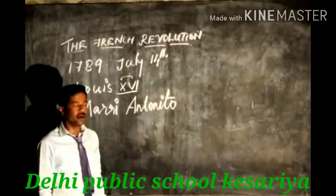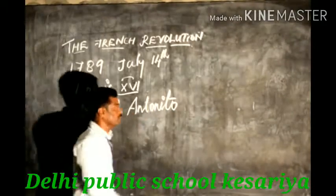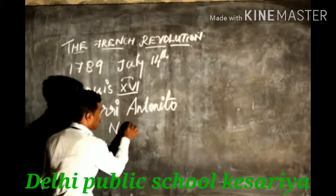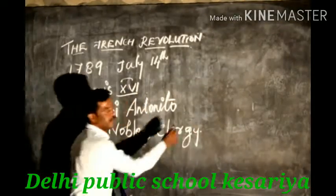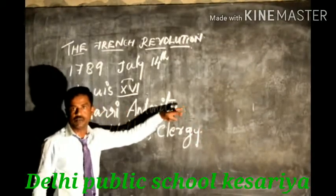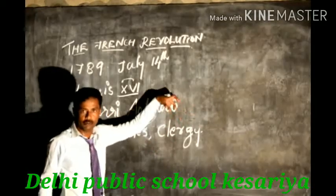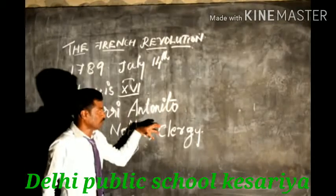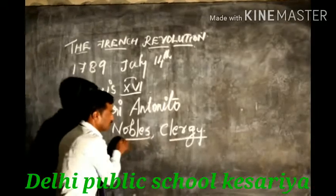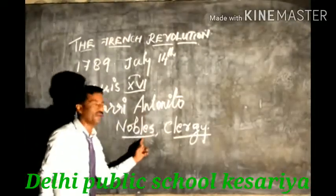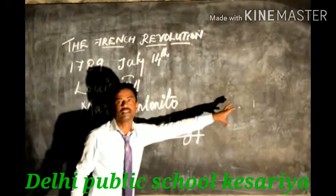At that time 90% of French people were commoners, and 10% were nobles and clergy. Clergy means the priests of the church — the fathers and bishops. The high families were considered as clergy and nobles, the aristocracy. They were royal family members with special privileges and did not have to pay any taxes.